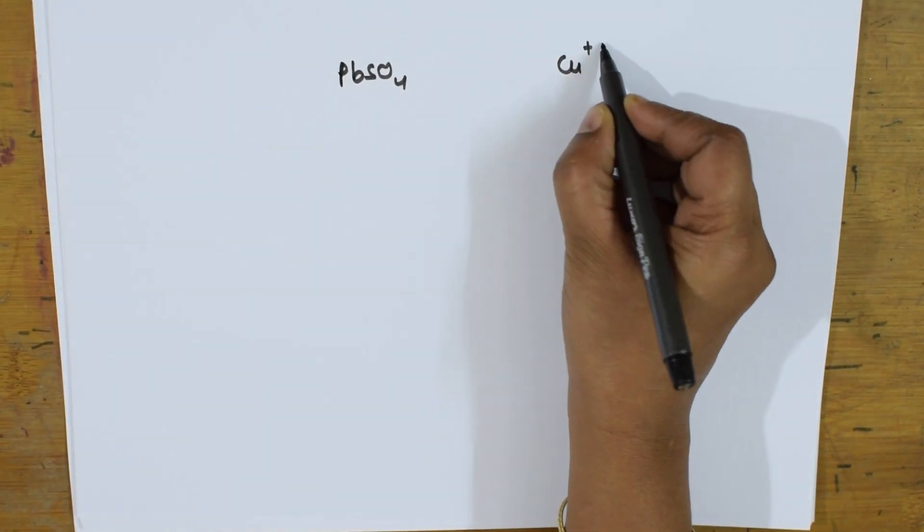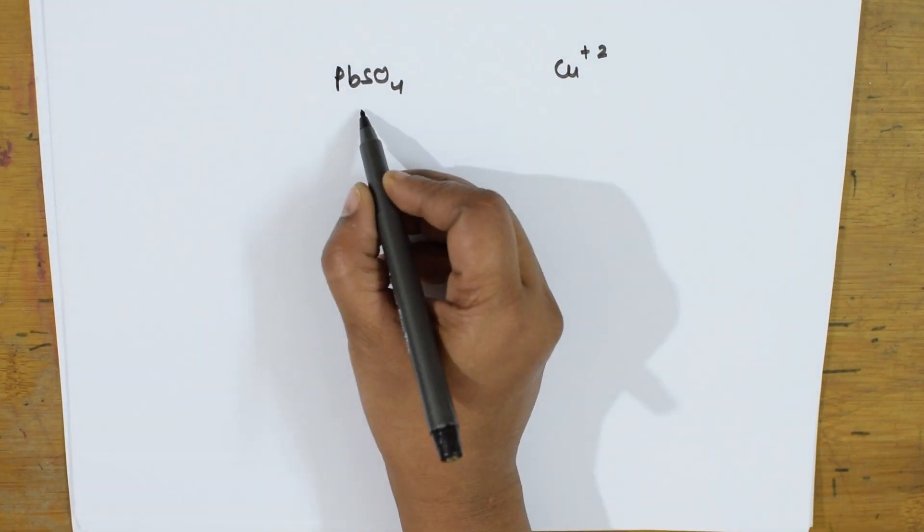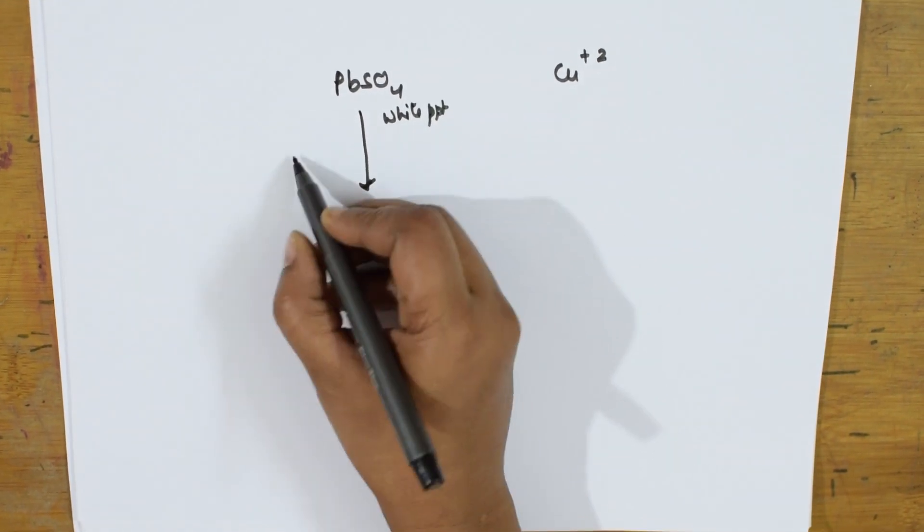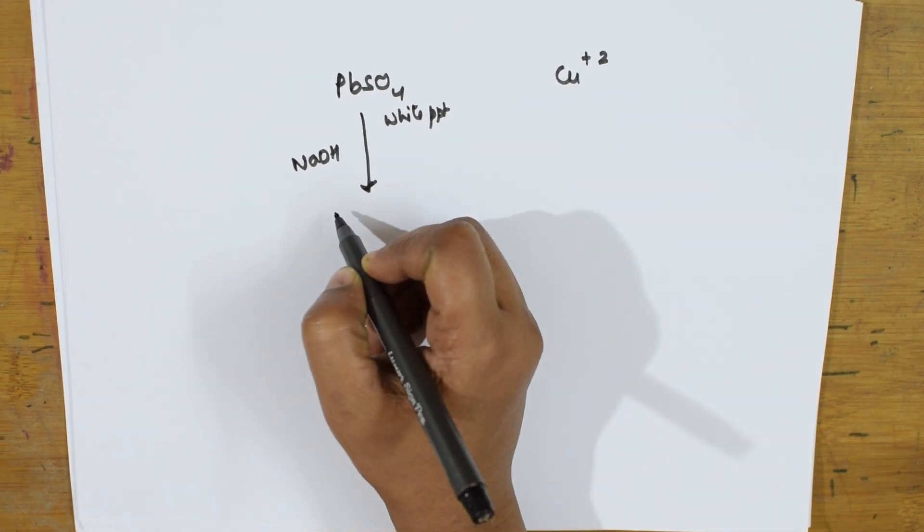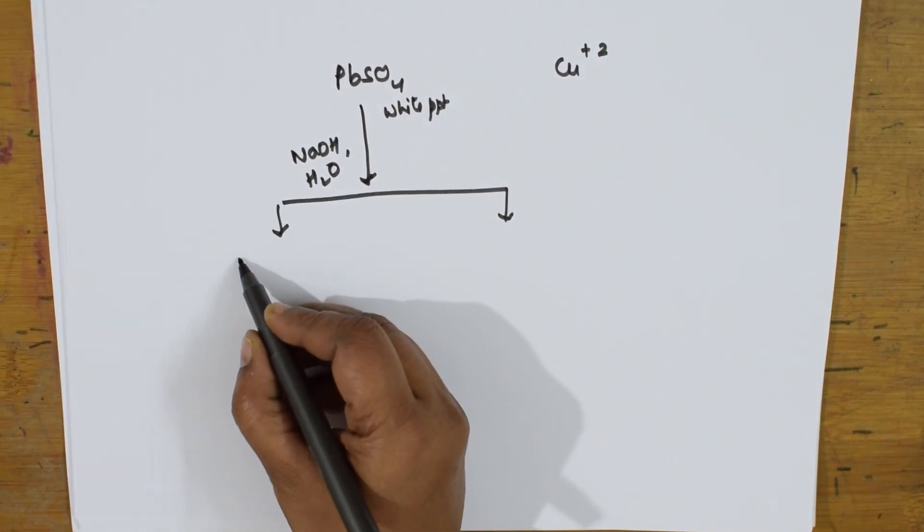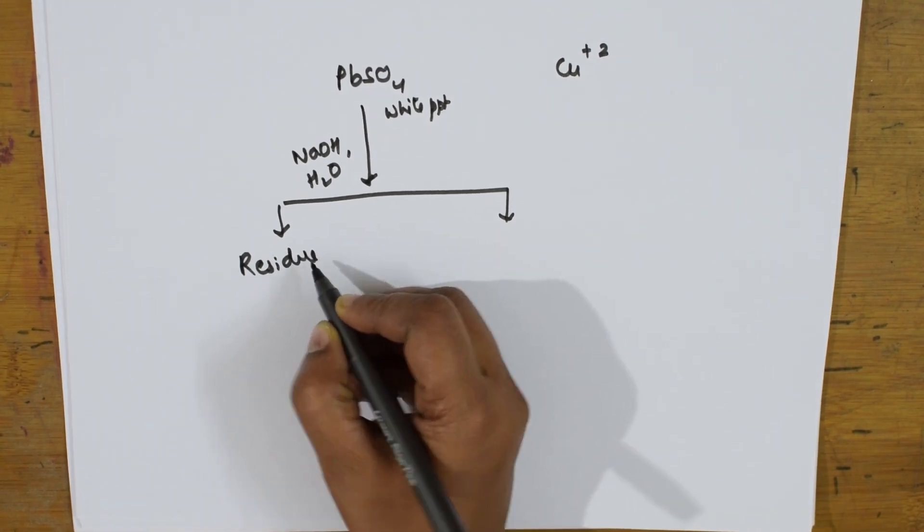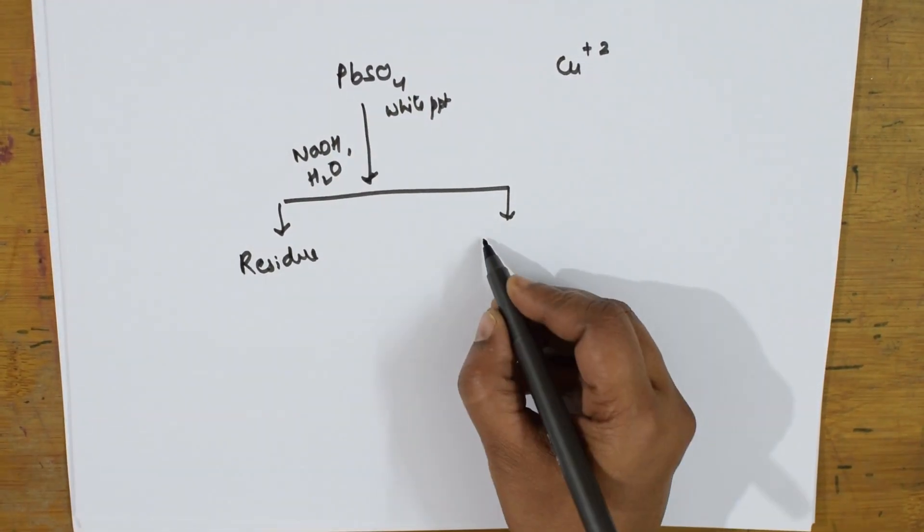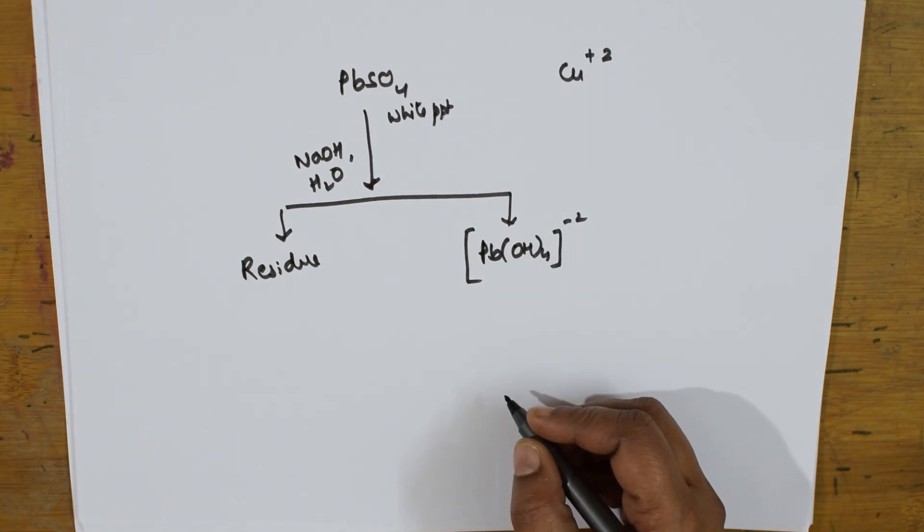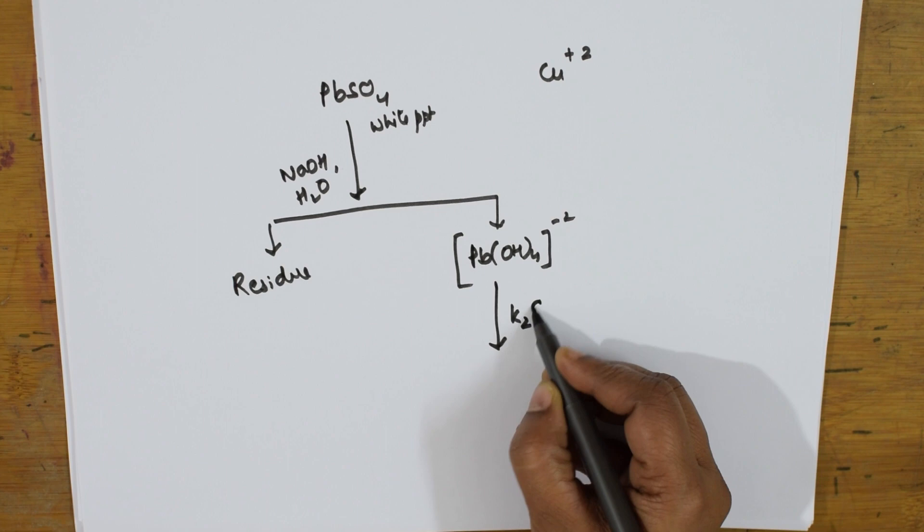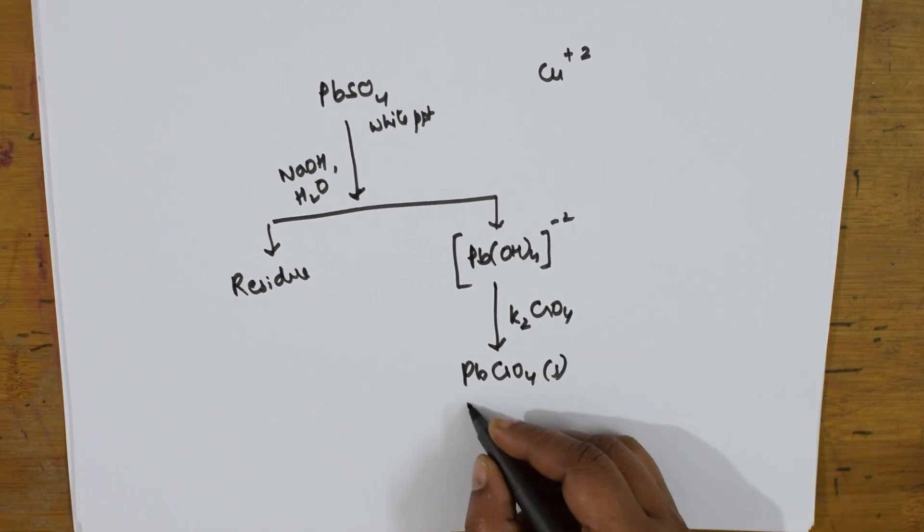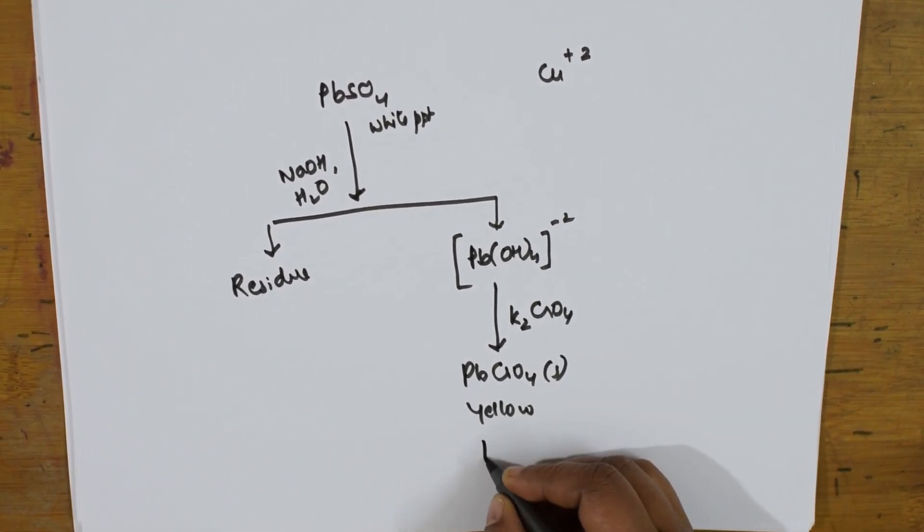Lead sulfate, what you will do is you take that lead sulfate PbSO₄ on one side, Cu²⁺ on the other side. To this, what you will do, you will be adding, this is a white PPT. Further to this, if you add sodium hydroxide and water, you divide this into two. One is a residue and the other forms lead hydroxide. Lead hydroxide, let us add potassium chromate. This is going to form lead chromate solid which is yellow in color. So this will confirm Pb²⁺ is present.